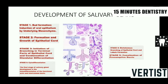Salivary glands develop from the oral epithelium, specifically from the oral mucosa. Bud formation is the first stage, involving induction of the oral epithelium by the underlying mesenchyme. The bud then grows down, similar to the dental anlage, as an epithelial cord, with initiation of branching at the terminal parts and condensation of the glandular mesenchyme.